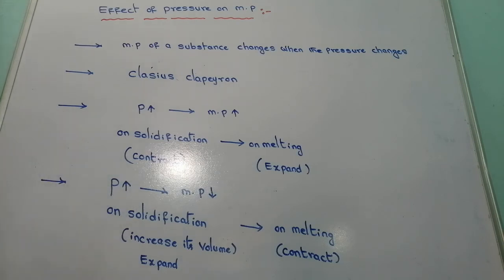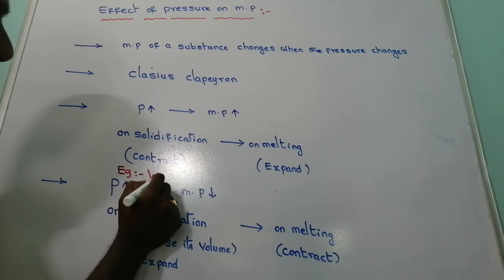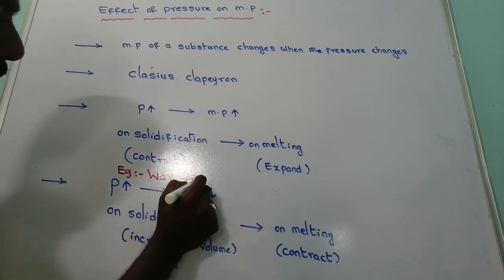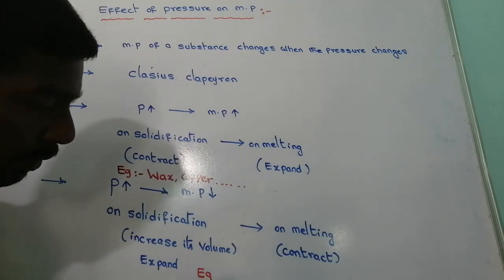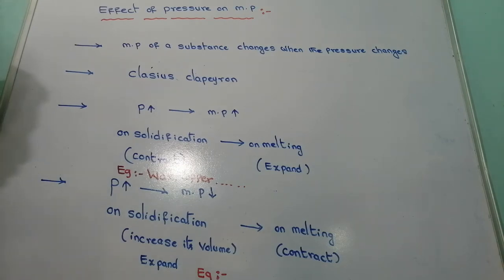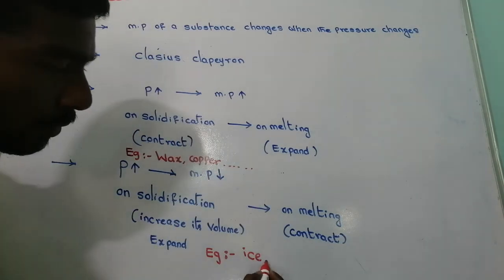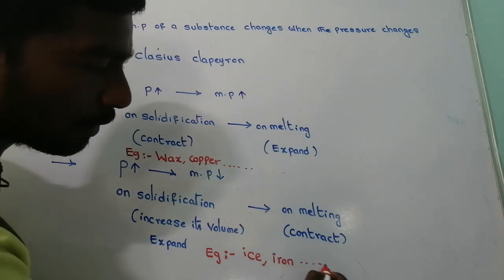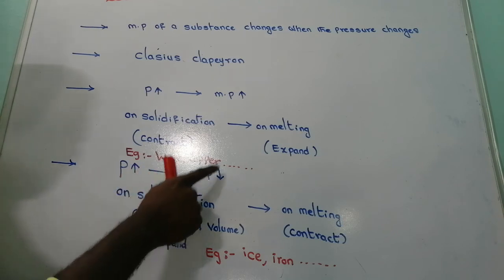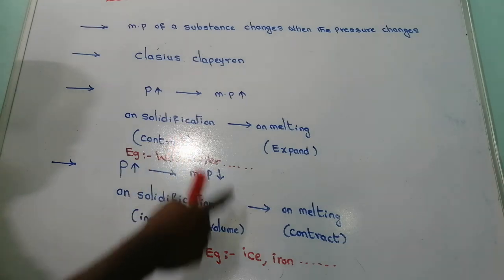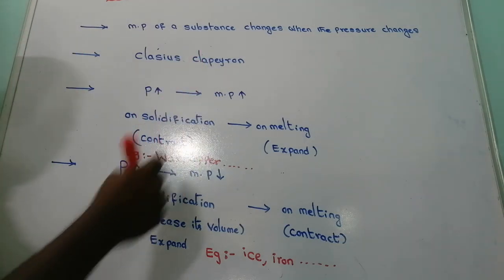Examples for substances where increasing pressure increases the melting point are wax, copper, etc. Examples for substances where increasing pressure decreases the melting point are ice, iron, etc.